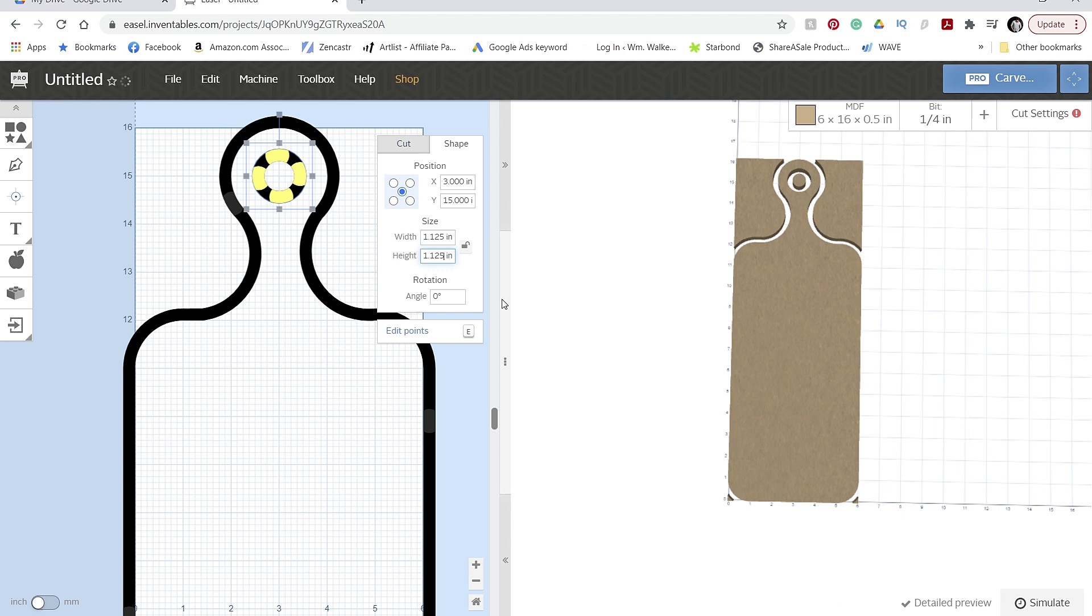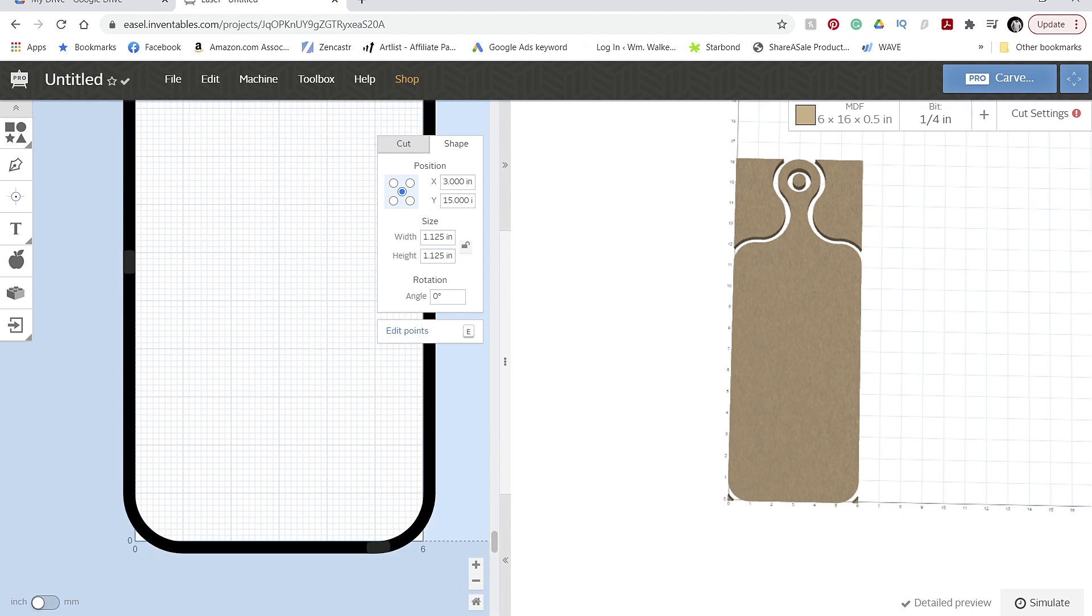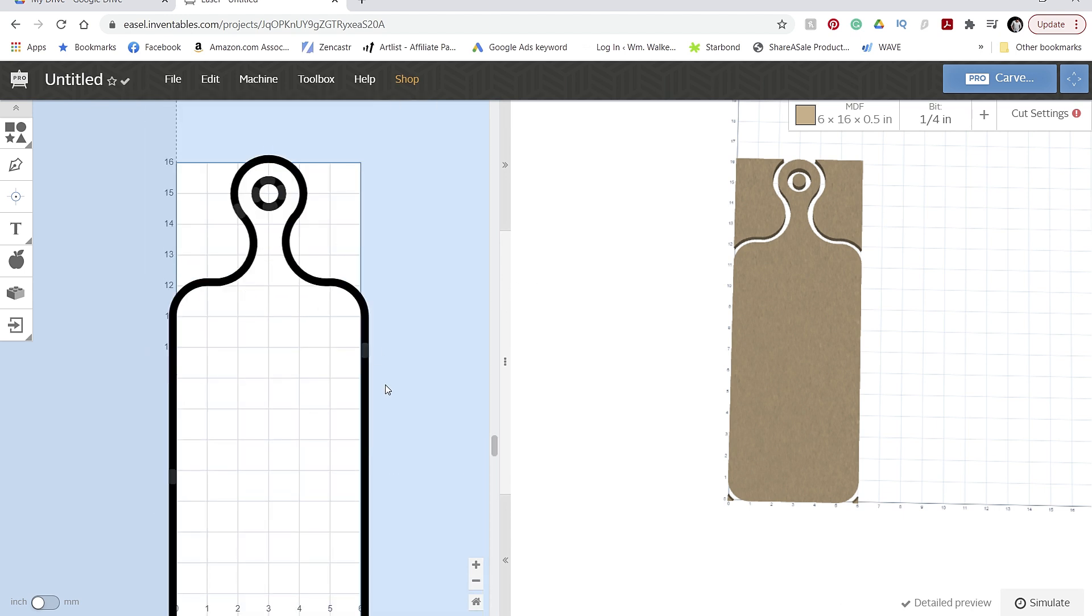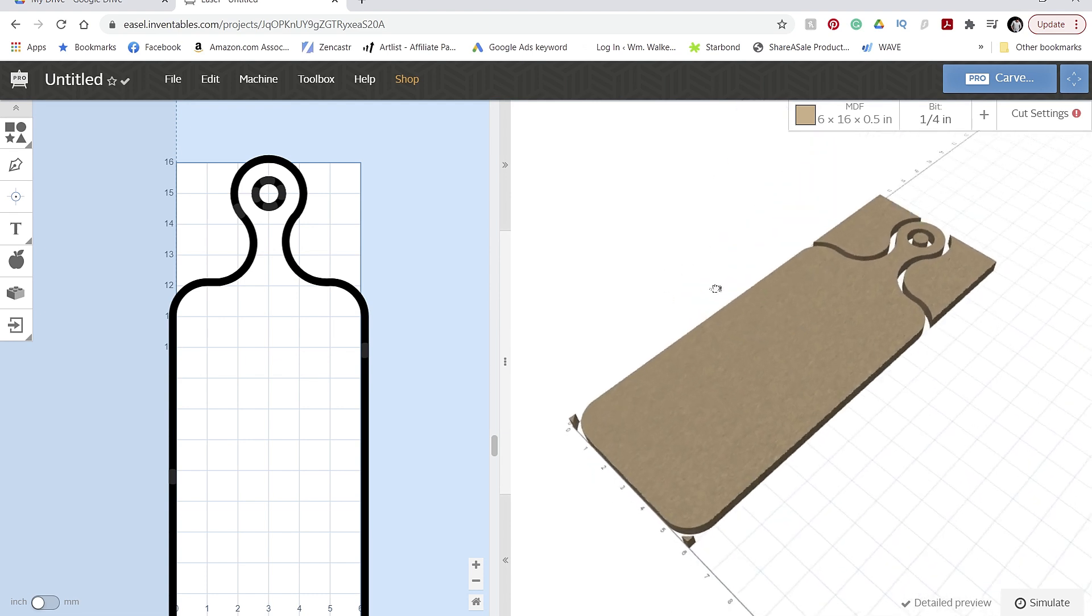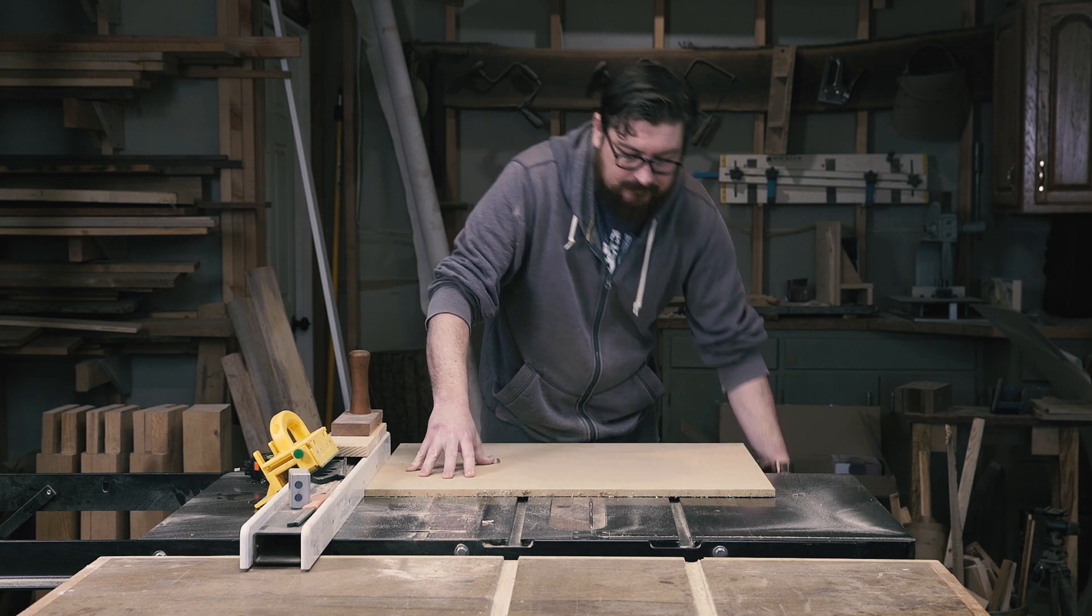I'm using Easel Pro, which has features like custom bits and v-carving. For this operation, I have the X-carve set up with a custom bit, which is a quarter-inch upcut spiral bit.